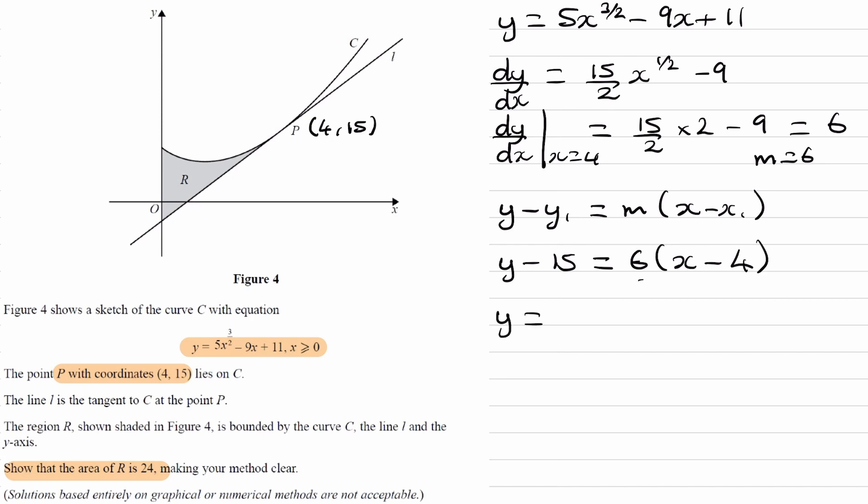I'll first expand this out. So we'll get 6x minus 24. Bring the 15 to the right, so plus 15. And then we end up with the equation of a line as y equals 6x minus 9.